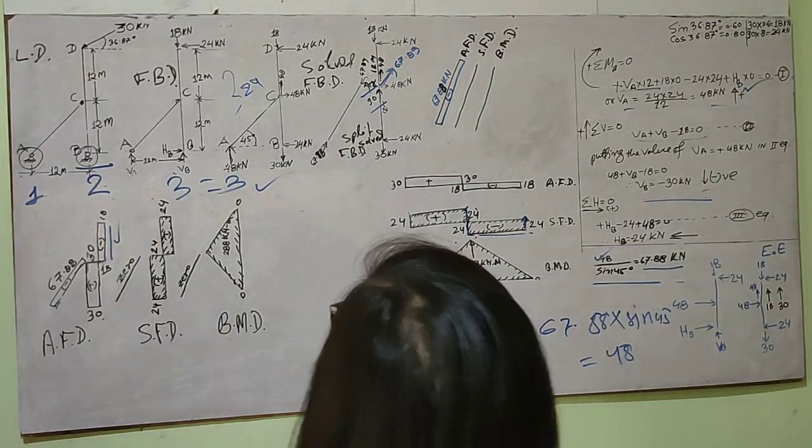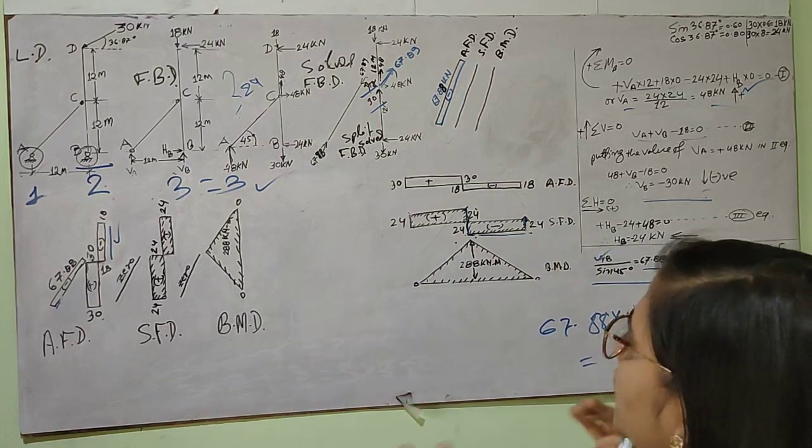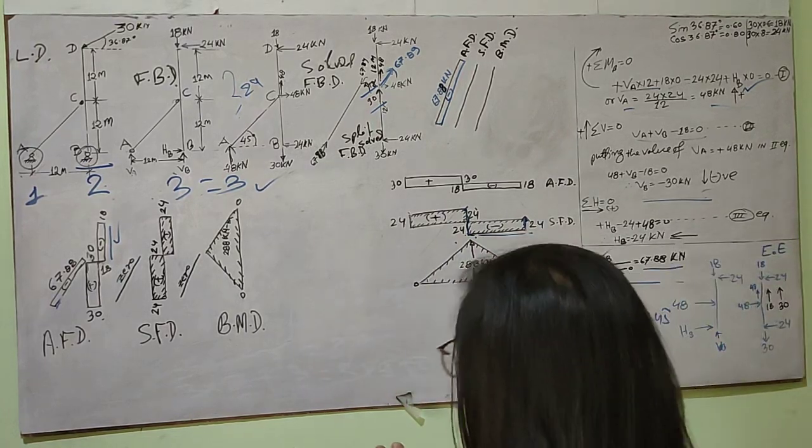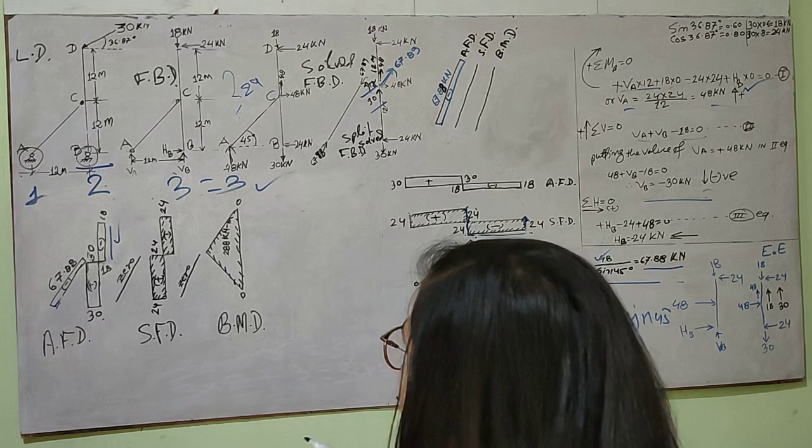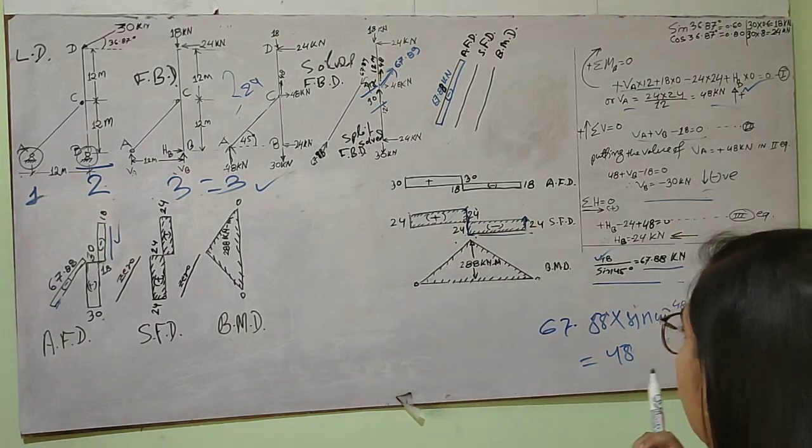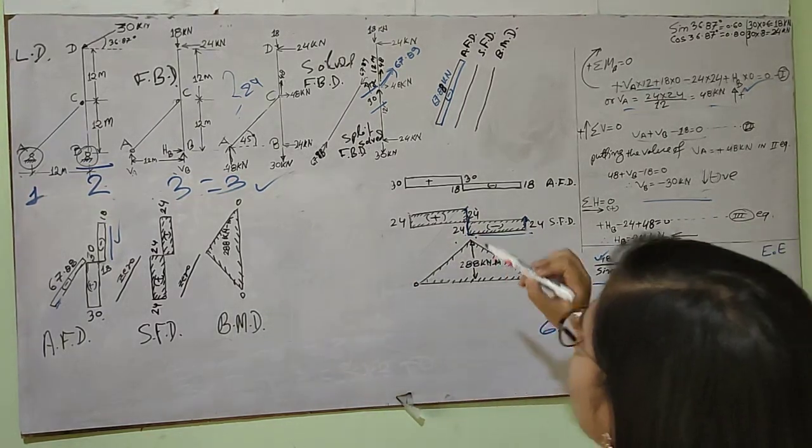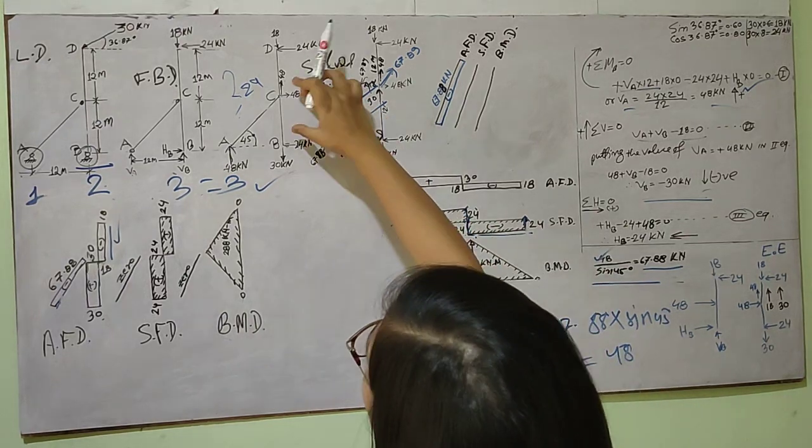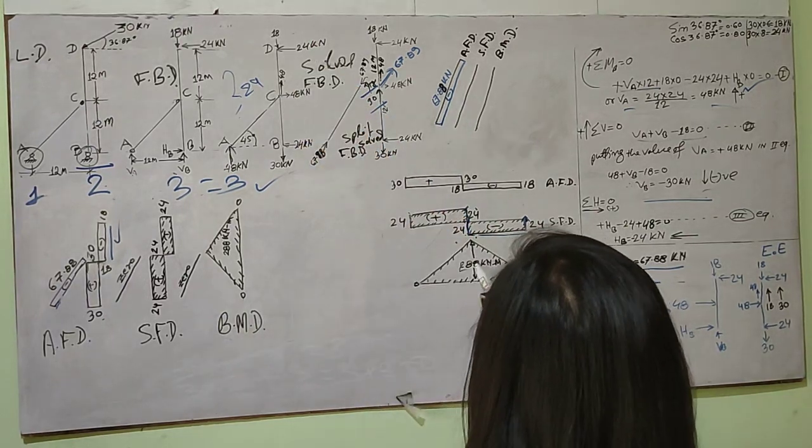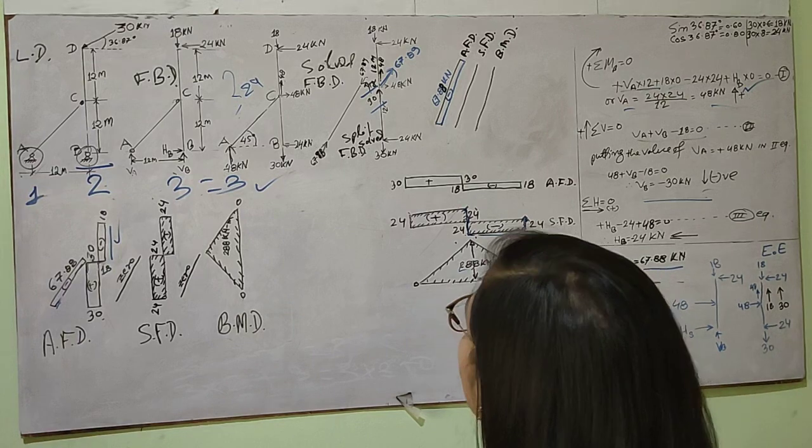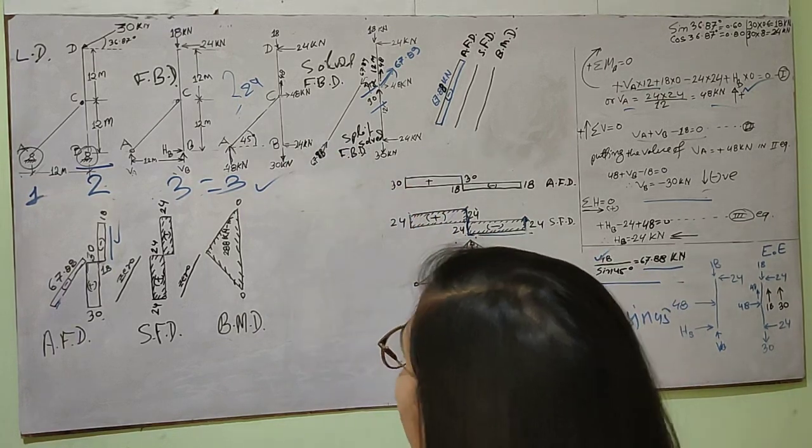In order to draw the bending moment diagram, I'll simply take hogging moments as negative and sagging moment as positive. This moment is sagging, so it is positive. So 24 into 12, if you do, you'll get 288 kilonewton meters, which is the bending moment.